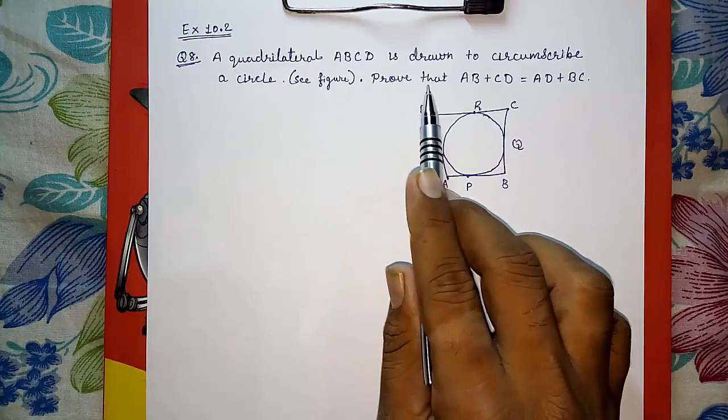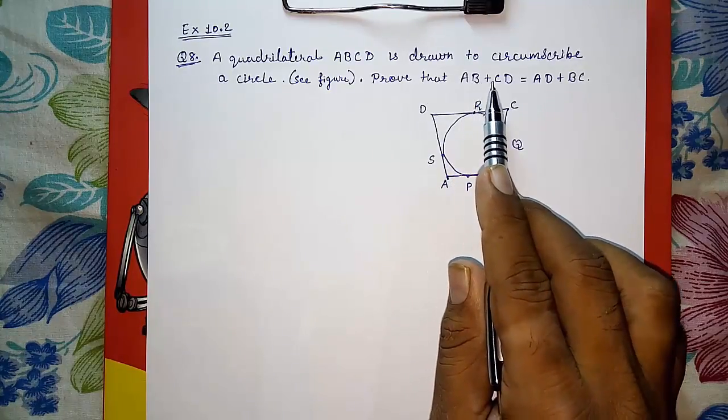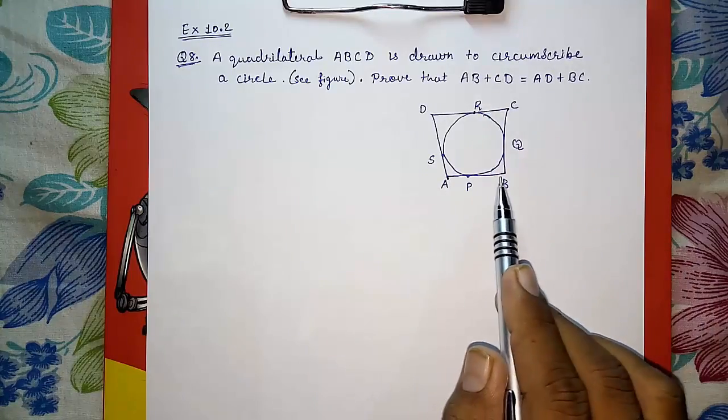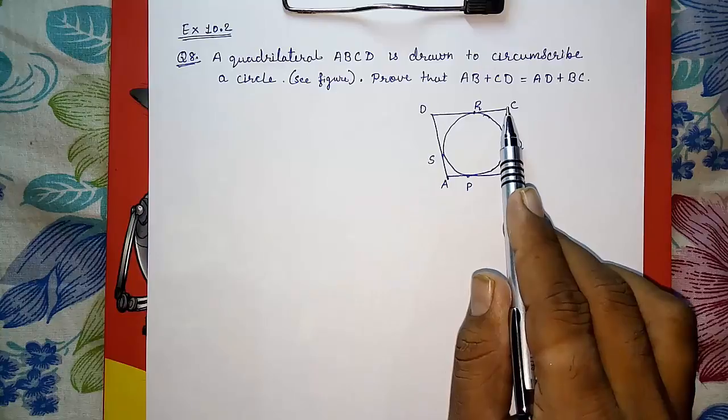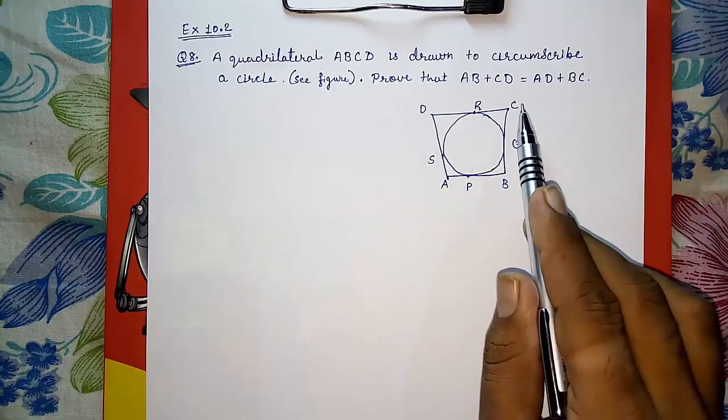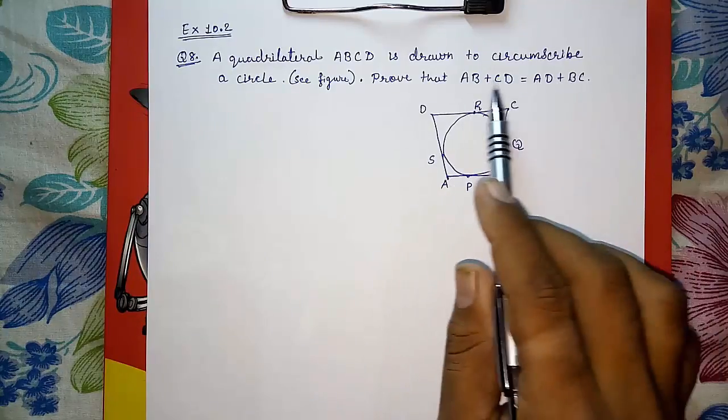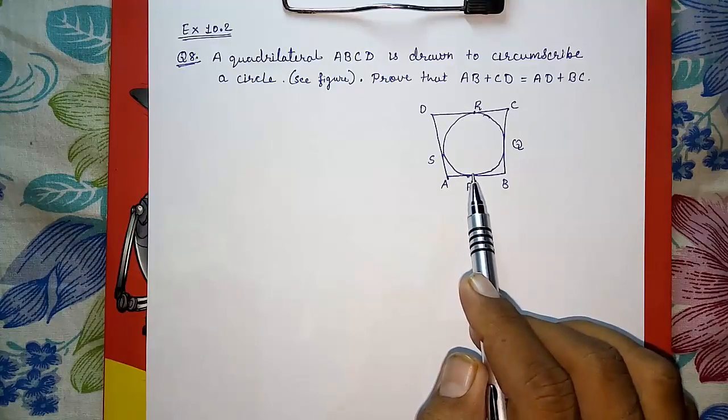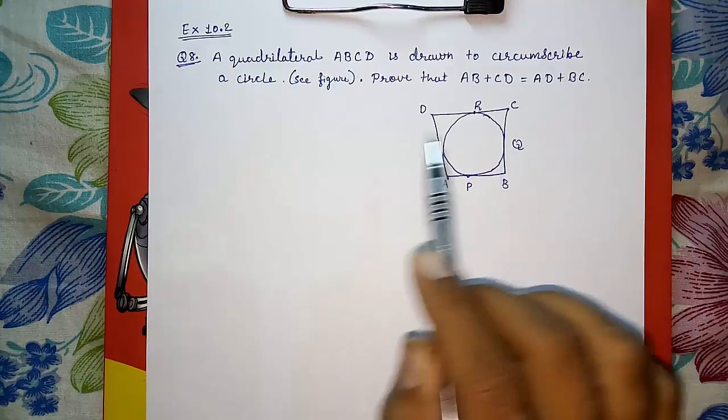We have to prove that AB plus CD is equal to AD plus BC. These are opposite sides. We have to prove that the sum of one pair of opposite sides is equal to the sum of the other pair of opposite sides.